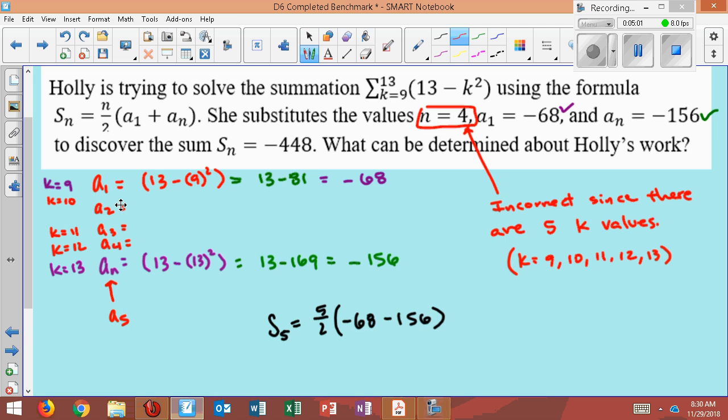If we weren't sure, we could have gone through and plugged in all these other values. We could have solved for them by saying 13 minus 10 squared, 13 minus 11 squared, and 13 minus 12 squared. That would have been 13 minus 100, which would have given us negative 87. Here we would have 13 minus 121, which when you subtract that we get negative 108. And then here we would have 13 minus 144, which is negative 131. As you look at this, you'll see that when you add all these up, you would get that negative 550 if you add these up in the calculator. That's the problem with using this formula. It would never actually work.